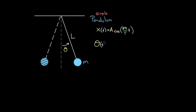Theta as a function of time equals some amplitude — but since we're measuring theta, the amplitude is not a displacement in X. It's the maximum angular displacement from equilibrium. That equilibrium is the center line; if you place the mass there it stays, with no net force. Only when you displace it does a restoring force appear. So the amplitude is theta maximum, multiplied by cosine of two pi over the period times t.